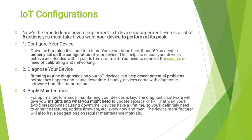Configure your device, diagnose your device, then apply maintenance, then ensure proper authentication, then monitor your IoT devices. For configuring your device, open the box, plug it in and turn it on. You are not done here — you need to properly set up the configuration of your device. This helps to ensure your devices behave as intended within your IoT environment. You need to connect the sensor, and then calibrate and set up networking.